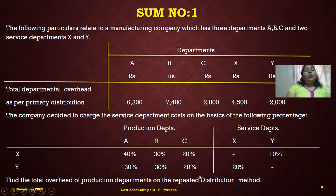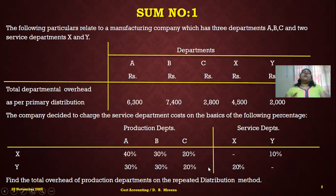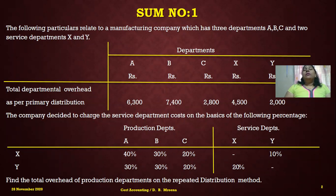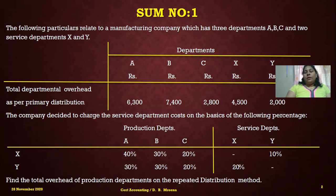The problem specifically mentions which method to follow to prepare the secondary distribution summary — the repeated distribution method. Under this method, you keep on redistributing the service departments' overheads till each service department column reaches zero. That is the unique feature and highlight of the repeated distribution method.